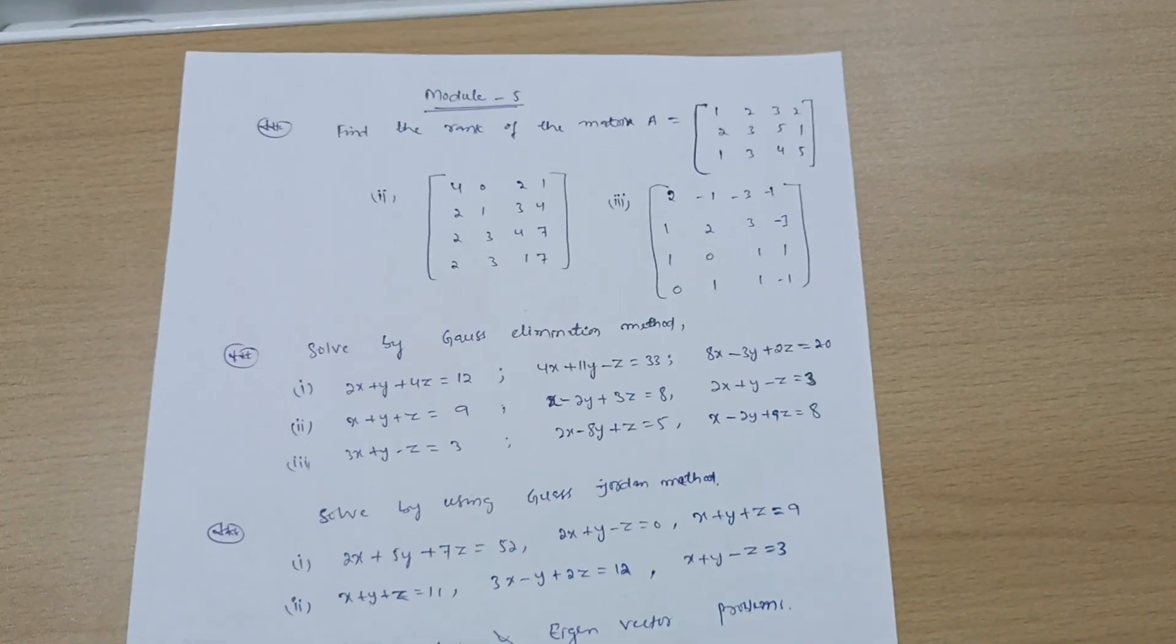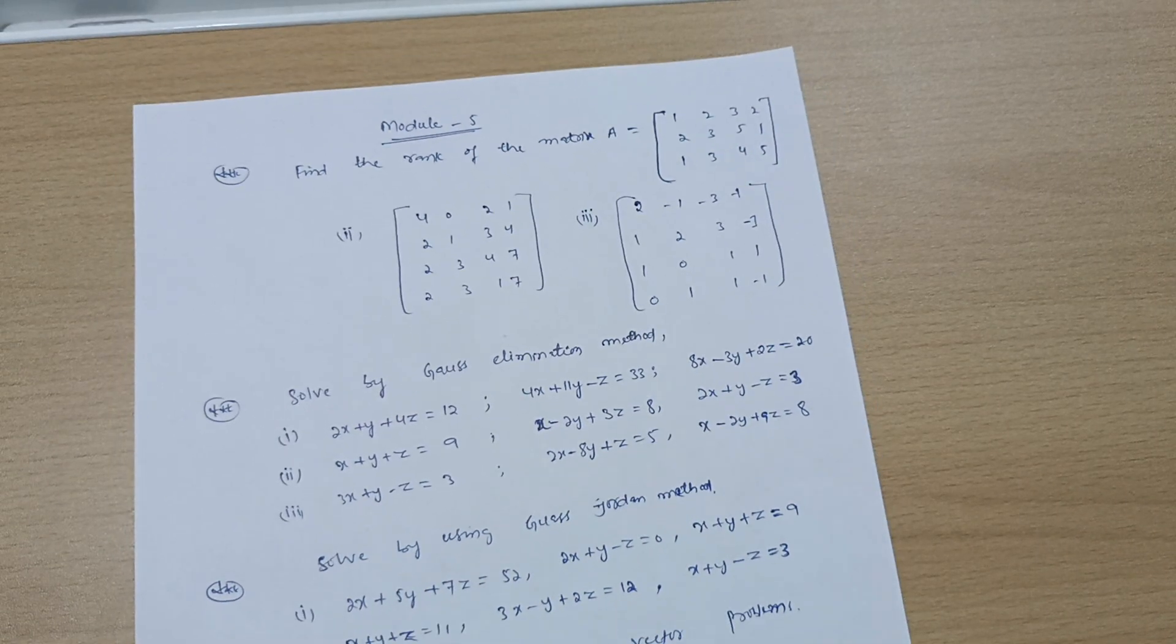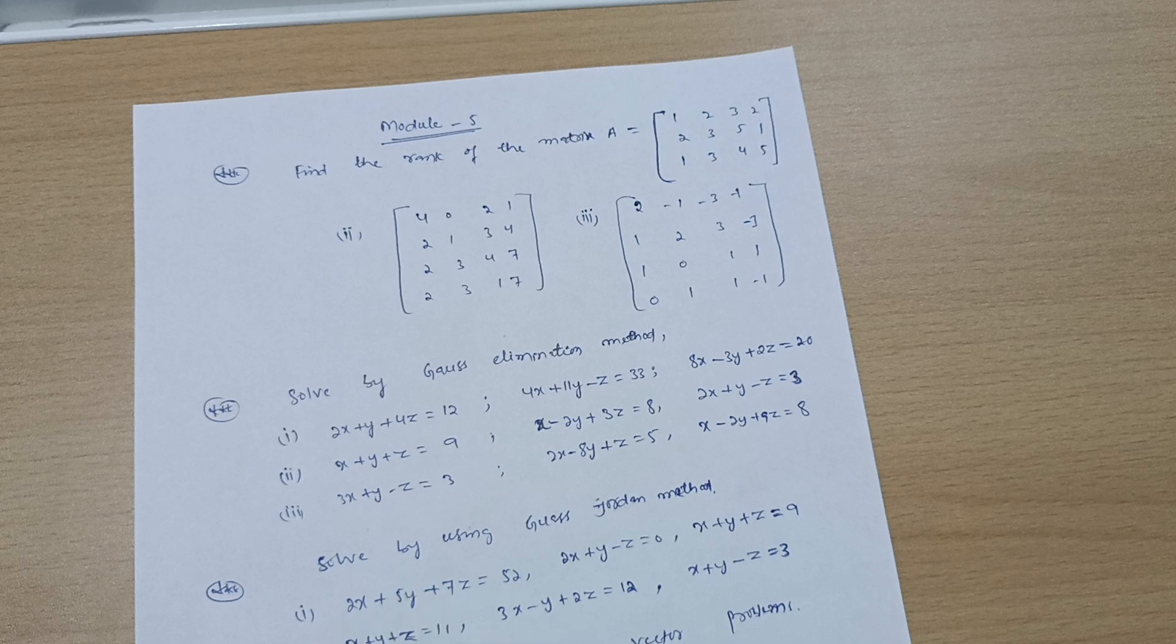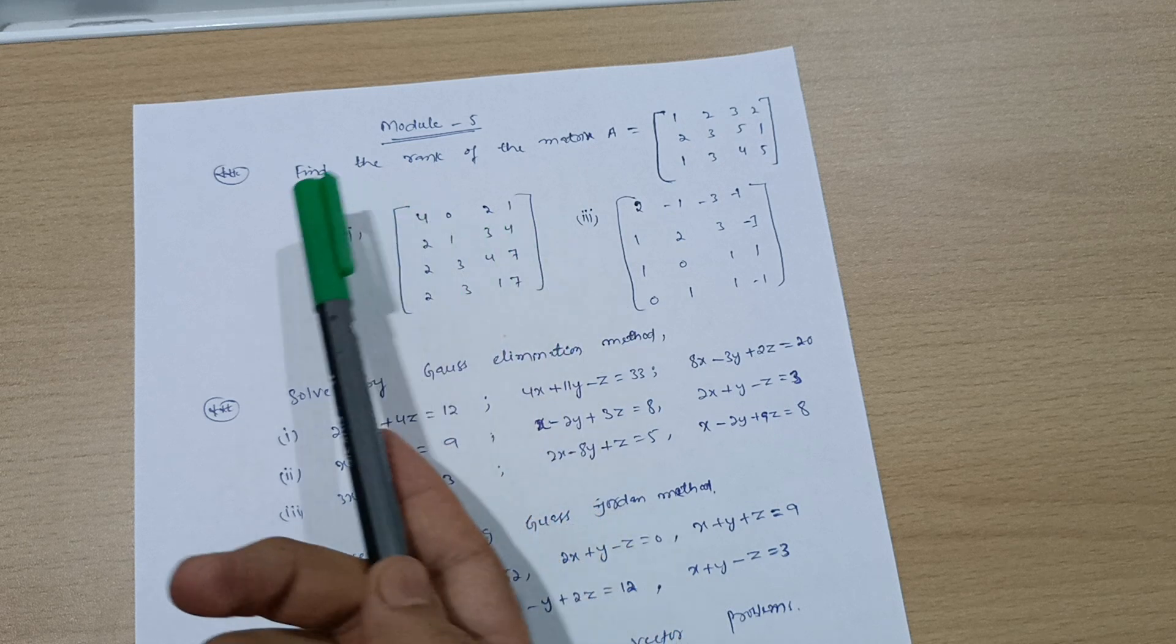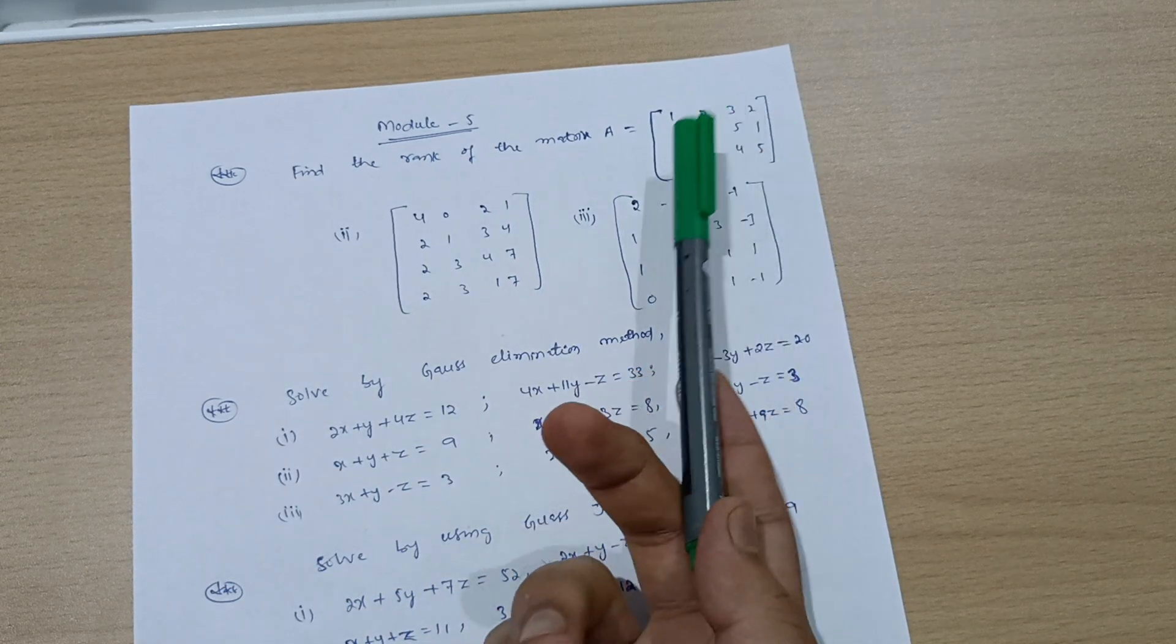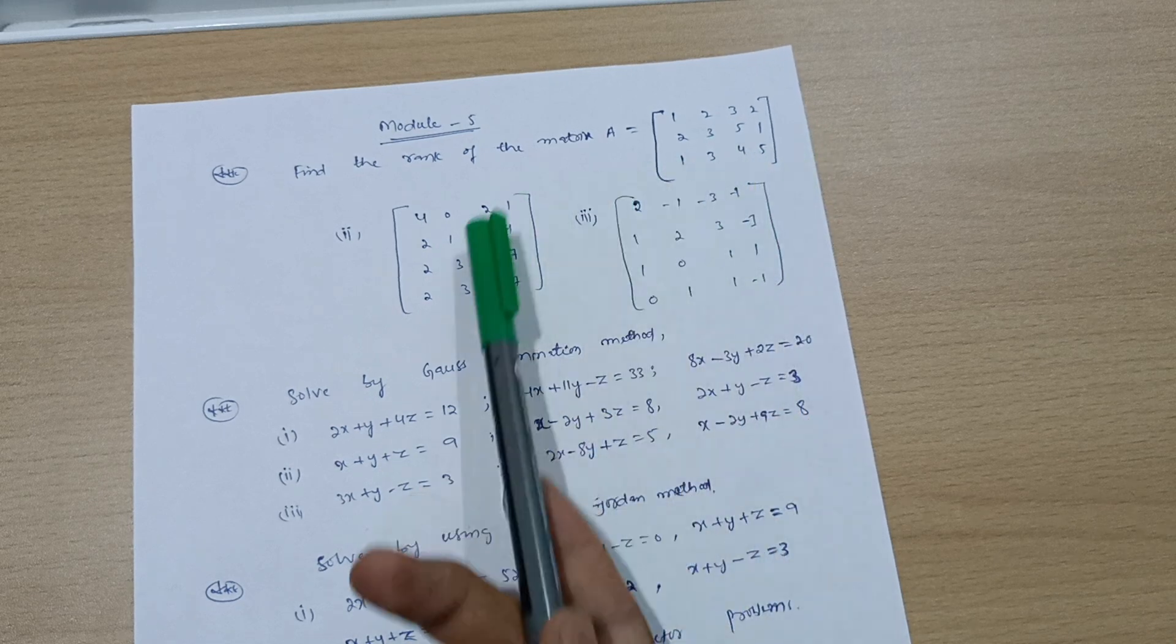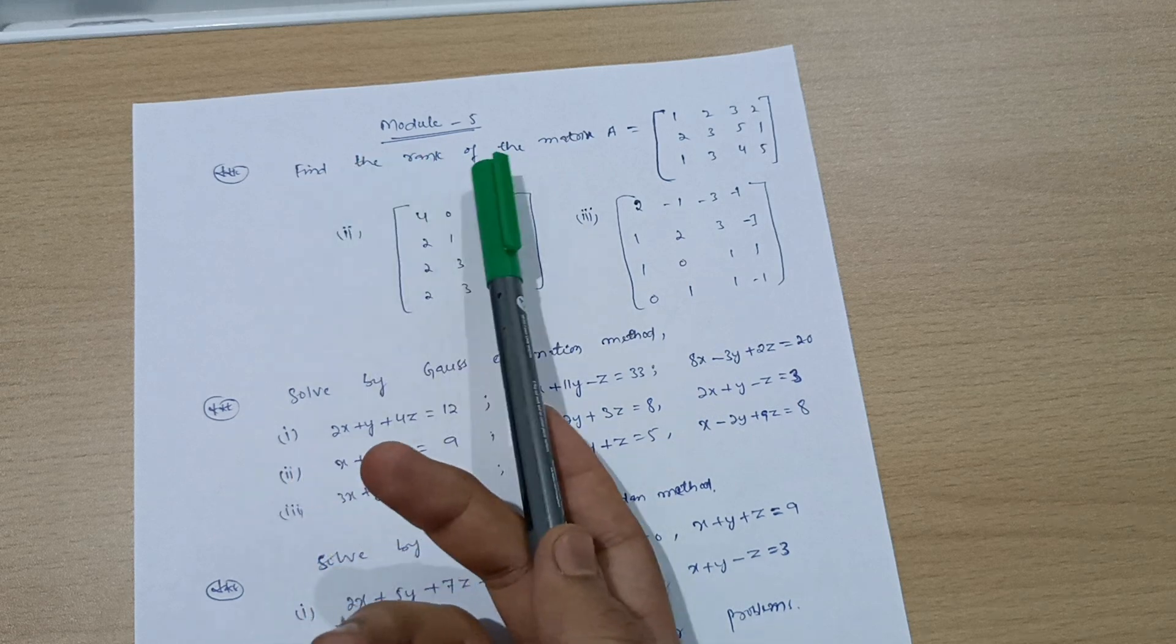Next is the simpler module where you can easily grab 20 marks. These 20 marks are just in your pocket. Find the rank of the matrix a equals [1 2 3 2; 2 3 5 1; 1 3 4 5]. You have to solve some 4 to 5 problems on the rank of matrix.